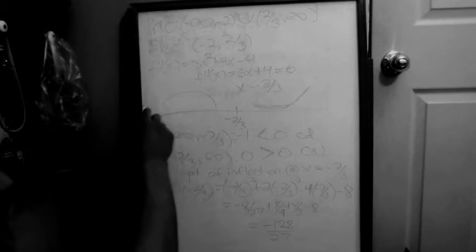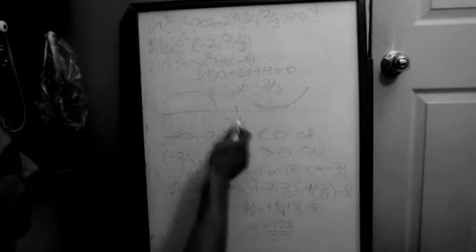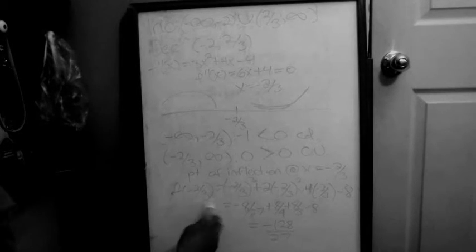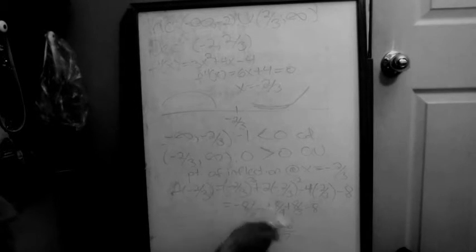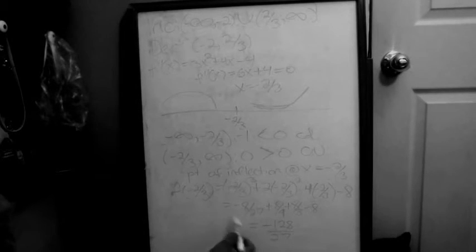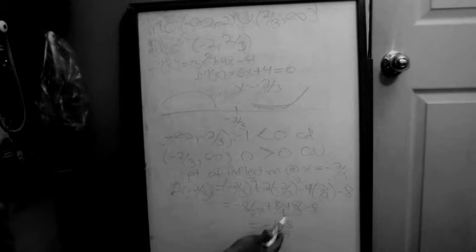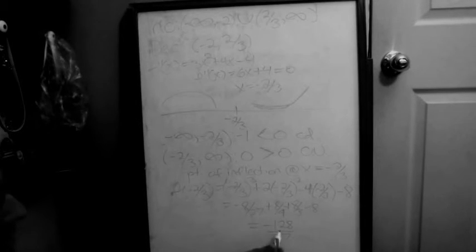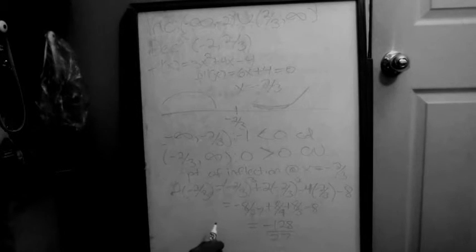Since the concavity changes from down to up, there is a point of inflection at x = −2/3. Plugging −2/3 into the original function: (−2/3)³ + 2(−2/3)² − 4(−2/3) − 8 = −8/27 + 8/9 + 8/3 − 8, which simplifies to −128/27. So the point of inflection is at (−2/3, −128/27). Now that we have all this information, we can finally sketch the graph.